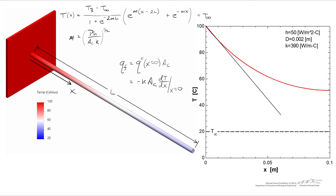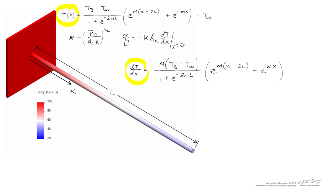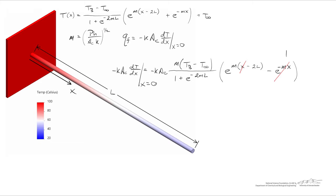To find the temperature gradient, we differentiate T with respect to x, resulting in this equation. We need the gradient at x = 0, which gives something a bit simpler. Multiplying both sides by negative k times the cross-sectional area gives us an expression for Qf — the rate at which the fin is pulling heat from the base. Here's the cleaned-up expression for Qf.